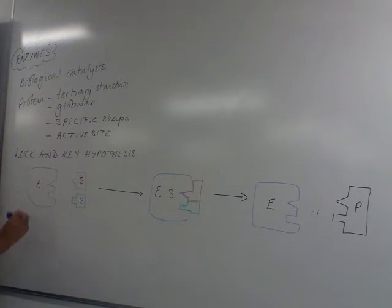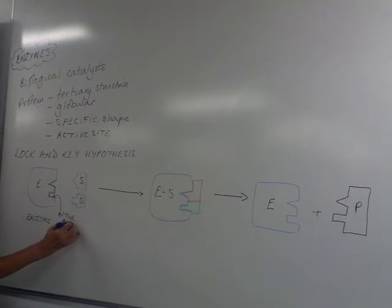So the principle of the lock and key hypothesis is that you have an enzyme. It has this specifically shaped area called the active site. Now you do have to be careful with spelling active site because so many people spell it like sight as in sight test, looking at things.